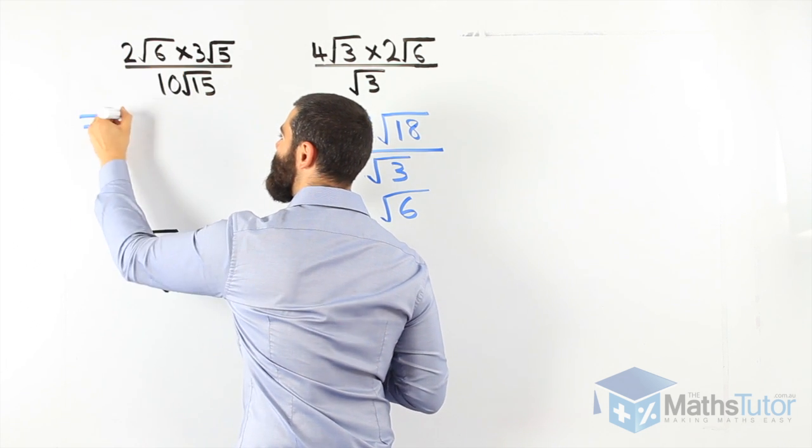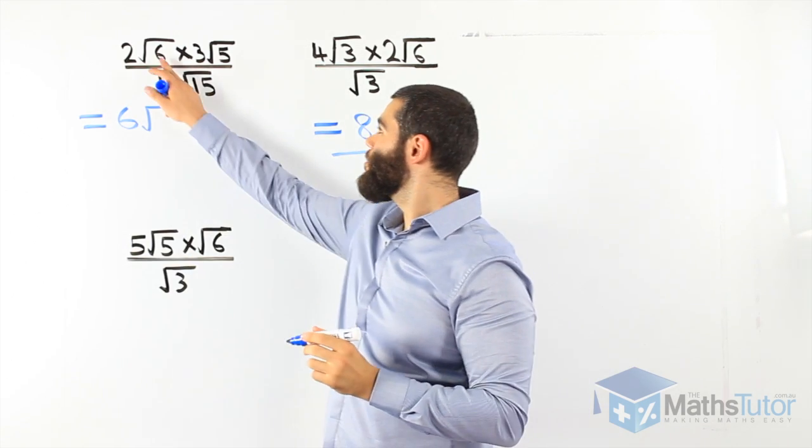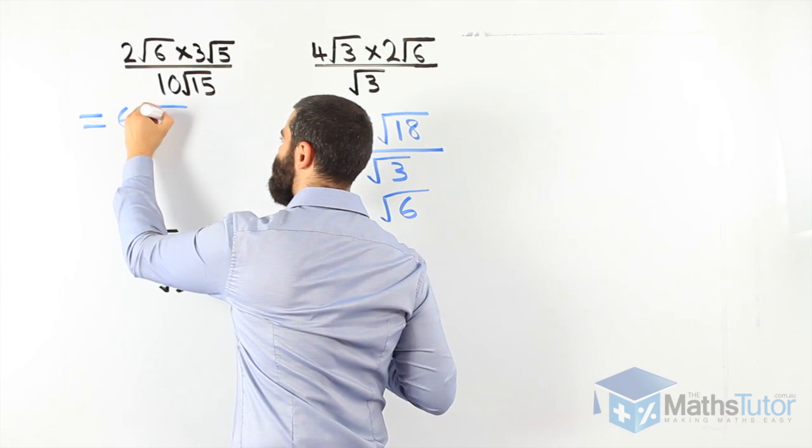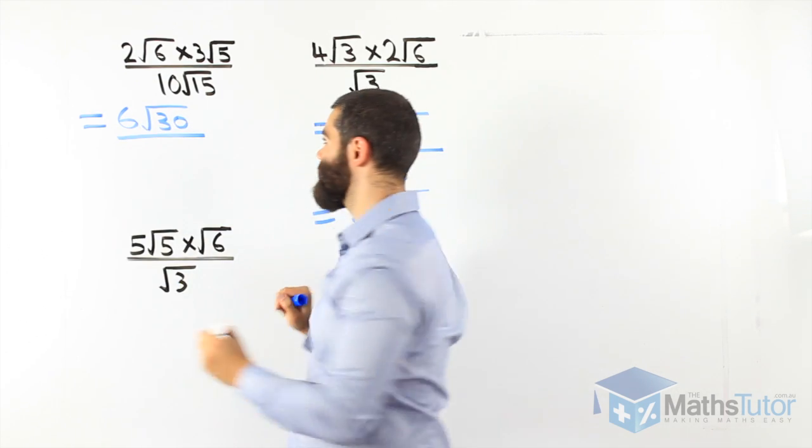2 times 3 is 6. We multiply now the surds. Root 6 times root 5, root 30. All over 10 root 15.